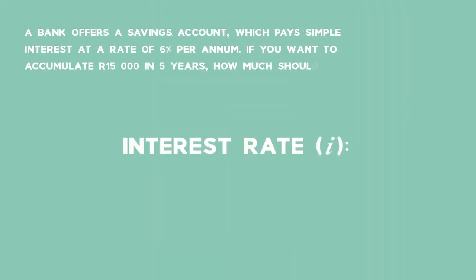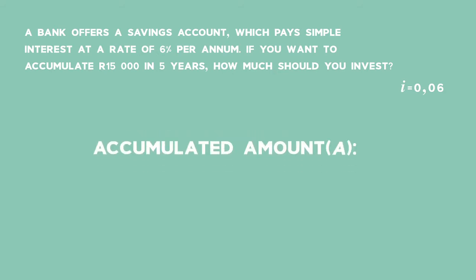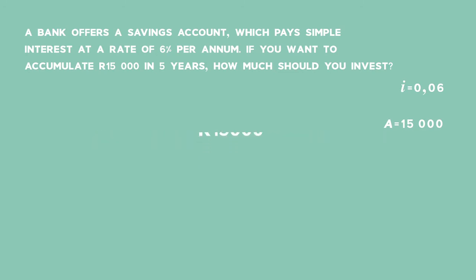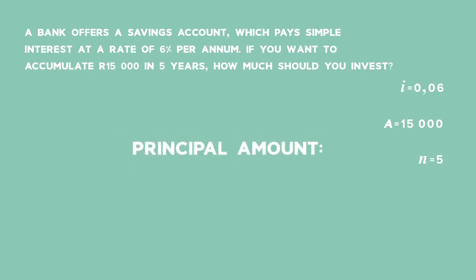My interest rate in decimal form will be 0.06. If you want to accumulate 15,000 rand, the accumulated amount at the end will be 15,000 rand, and you want to accumulate that in five years' time, so n would be equal to 5. They want to know how much you should invest — in other words, what is P.